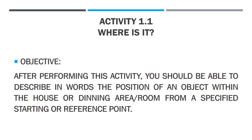Activity 1.1: Where is it? The objective of this activity is, after performing this activity, you should be able to describe in words the position of an object within the house or a dining area or a dining room for a specified starting or reference point.